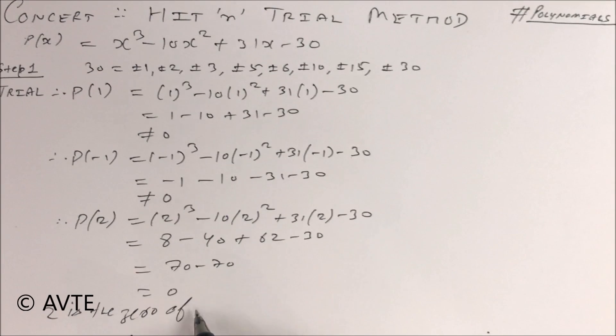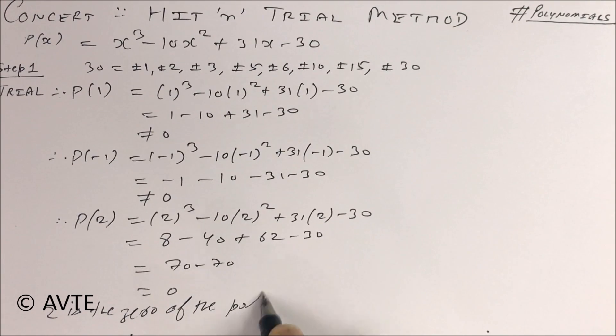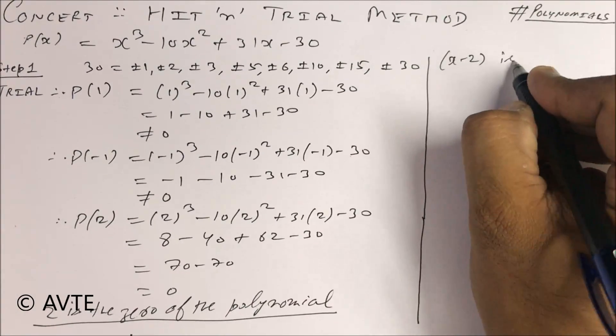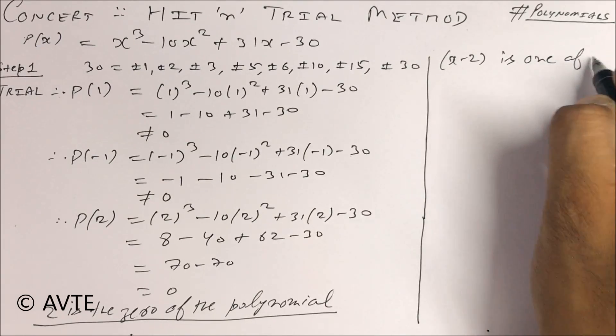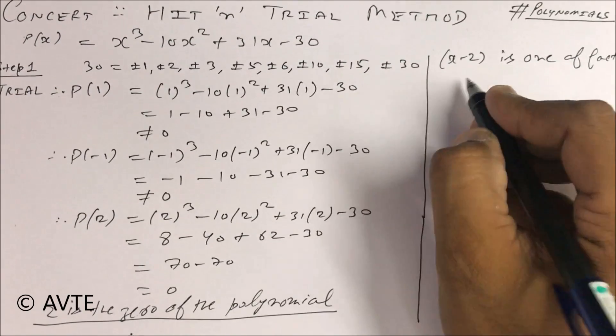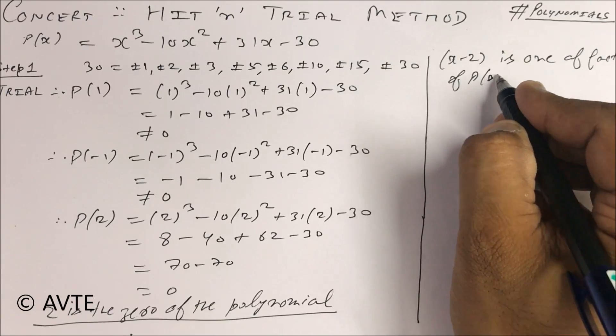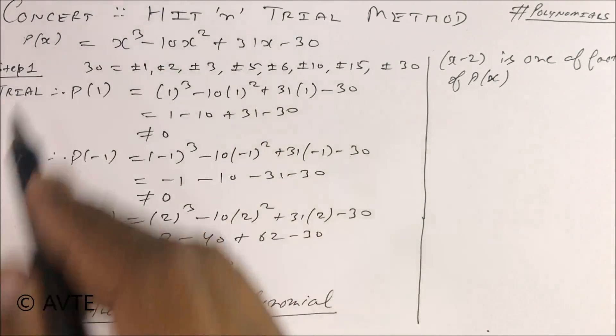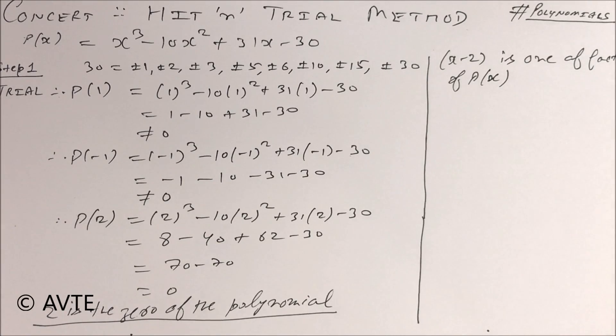So 2 is the zero of the polynomial. It means x - 2 is one of the factors of the given P(x). Because P(x) has degree 3, it has three values alpha, beta, gamma. One value is 2, so your first factor is x - 2.